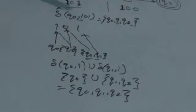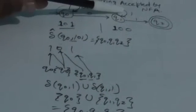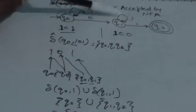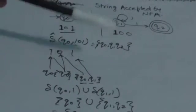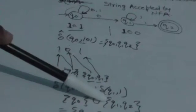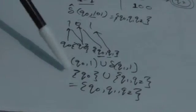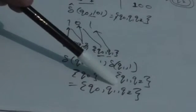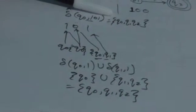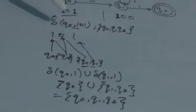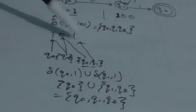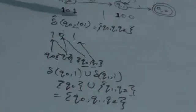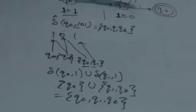When the machine is in state Q1 and we apply 1, it has two options: it can go to Q1 or Q2. So when we take the union of both results, the output is {Q0, Q1, Q2}. We applied 101 to the initial state and got this result. This set contains a final state Q2, so this string is accepted by the NFA.